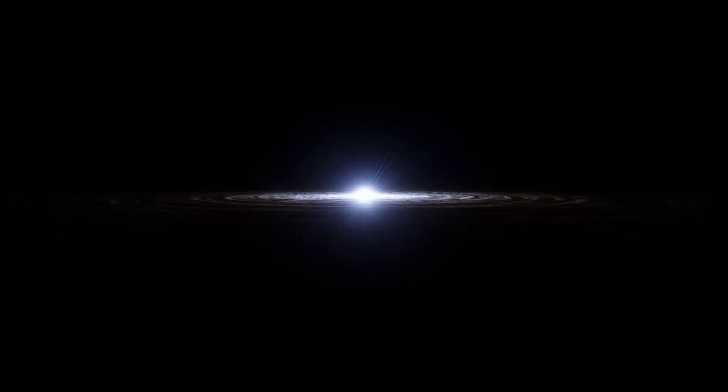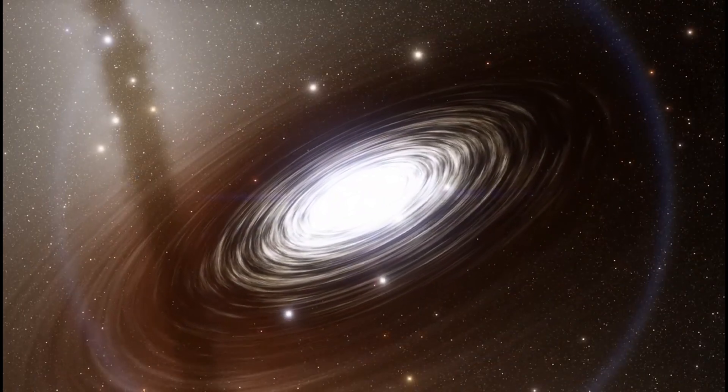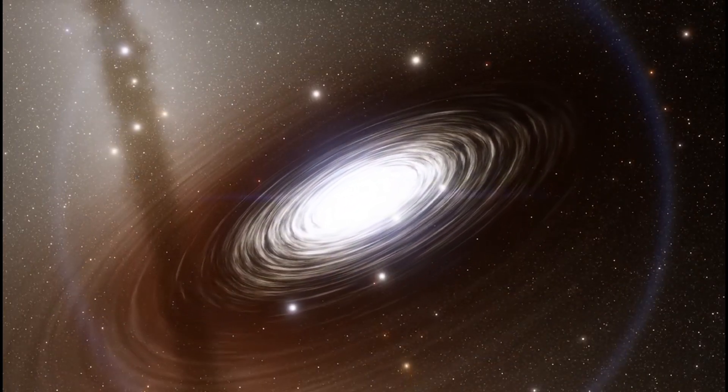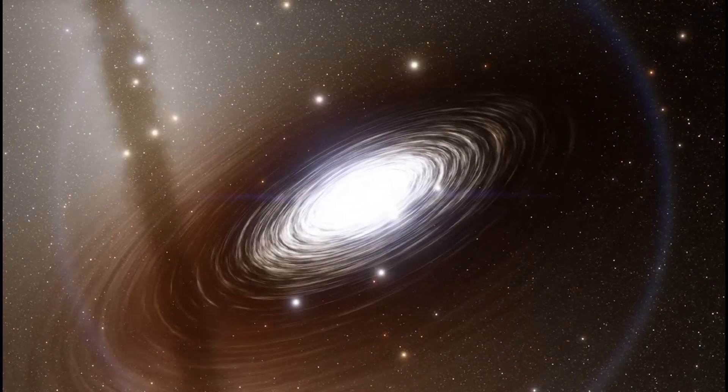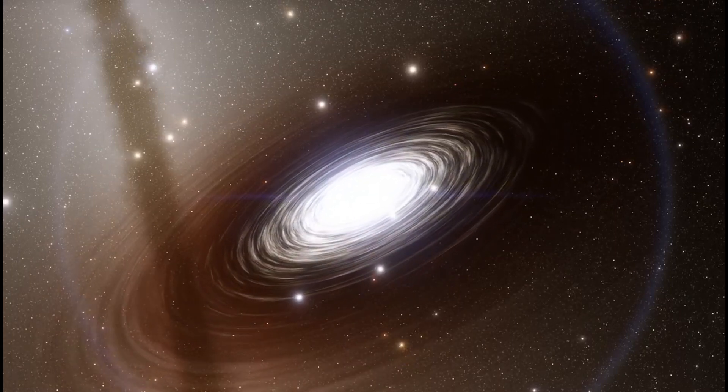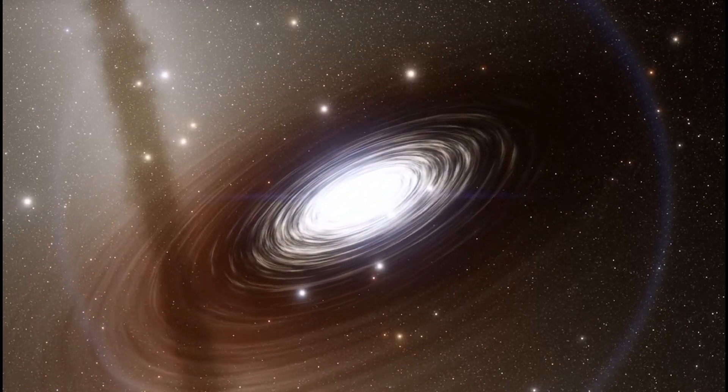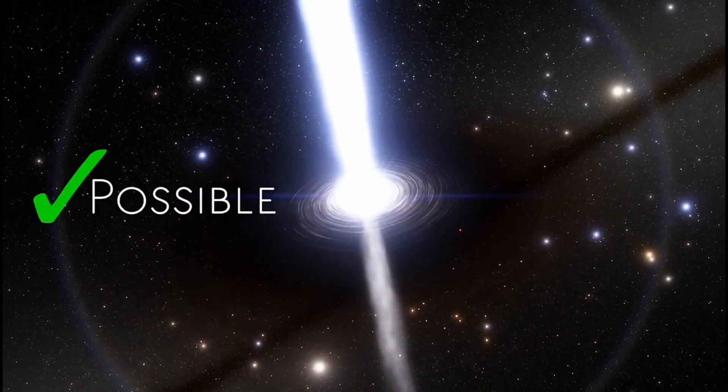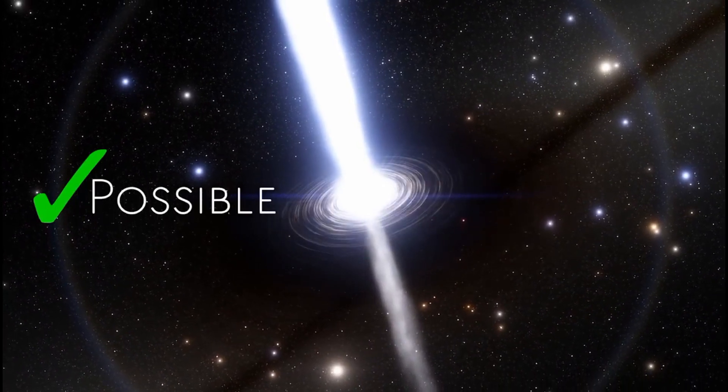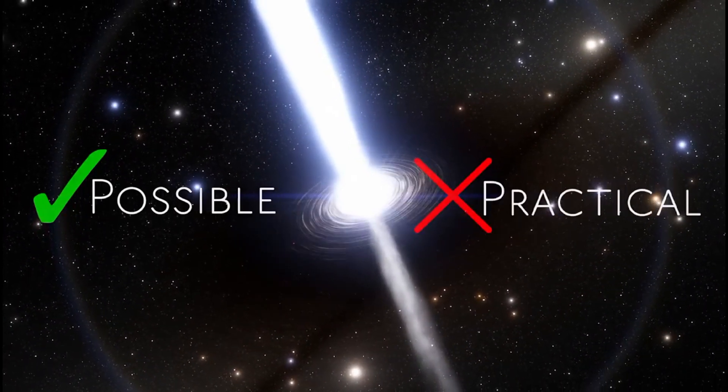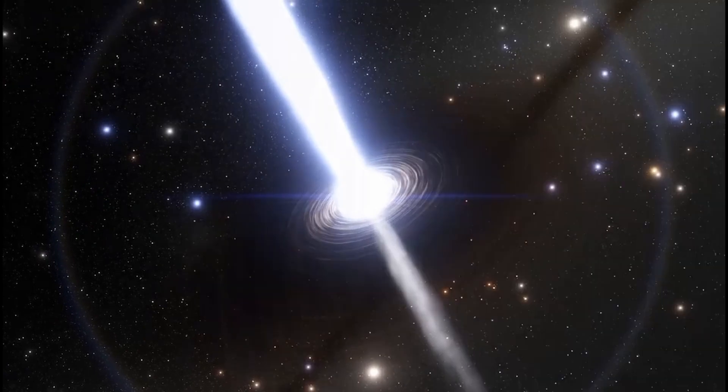The impact of black hole jets on their environment is profound. As they travel through space, these jets can collide with surrounding gas and dust, creating shock waves that trigger star formation or disrupt existing structures. They can also expel material from the galaxy, affecting the overall dynamics and evolution of the host galaxy. By regulating the flow of gas and energy, black hole jets play a crucial role in shaping the cosmic landscape, highlighting the interconnectedness of these powerful entities with their surroundings.